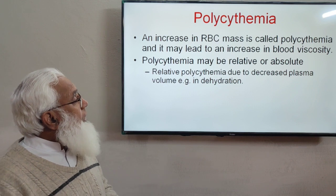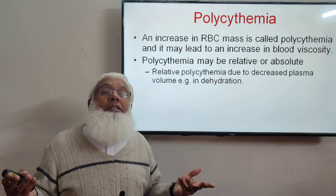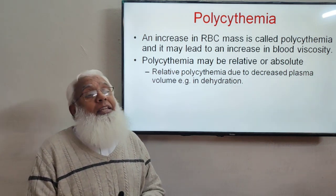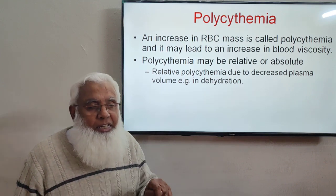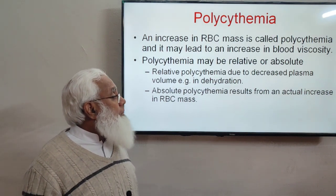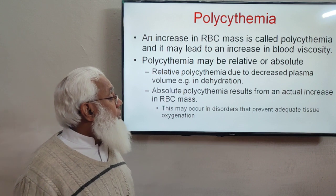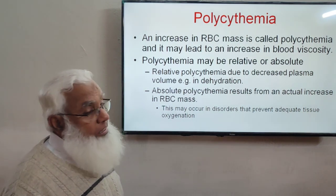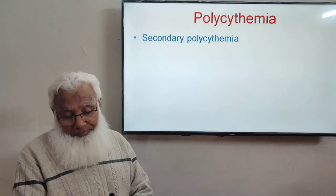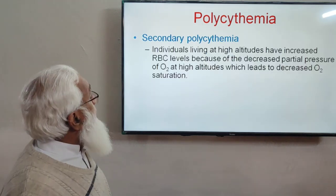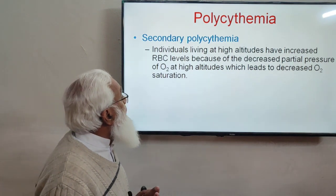Relative polycythemia is due to decreased plasma volume — for example, in dehydration. If a person loses water through diarrhea or vomiting, RBCs become concentrated even though their total number has not increased. Absolute polycythemia results from actual increased production of RBCs, which may occur in disorders that prevent adequate tissue oxygenation — such as people living at high altitude, where hypoxia drives erythropoietin production.